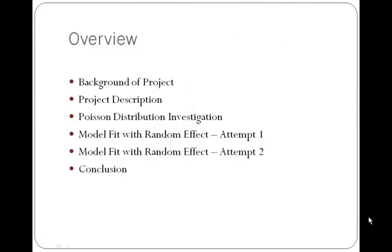As an overview of the project, I will talk about the background, which includes the objective and the data source. I will then continue with the project description, covering the independent variables, response variable, and methodology. I will then discuss the results via analysis, talking about the Poisson distribution of the data sets and the results from fitting the model for two attempts — attempt 1 without the overdispersion problem and attempt 2 taking overdispersion into account. Finally, I will conclude the presentation.